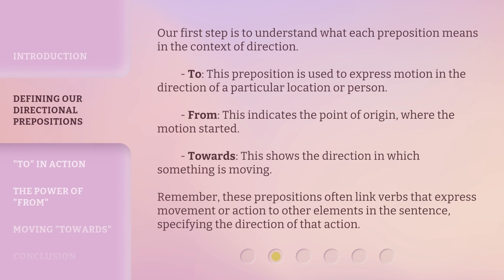Our first step is to understand what each preposition means in the context of direction. To: this preposition is used to express motion in the direction of a particular location or person. From: this indicates the point of origin, where the motion started. Towards: this shows the direction in which something is moving. Remember, these prepositions often link verbs that express movement or action to other elements in the sentence, specifying the direction of that action.